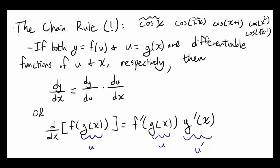You know how to differentiate x to the 7th power. You bring the 7 down and you subtract 1 from the 7 in the exponent, so you get 7x to the 6th for the derivative.